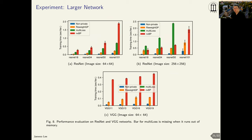Here we present the performance comparison on larger networks such as ResNet and VGG. We note that for larger input image sizes, the existing method — for example the multi-loss method — fails to run on ResNet-101. Since the VGG network requires a huge amount of memory, the multi-loss method also fails to run on this architecture.